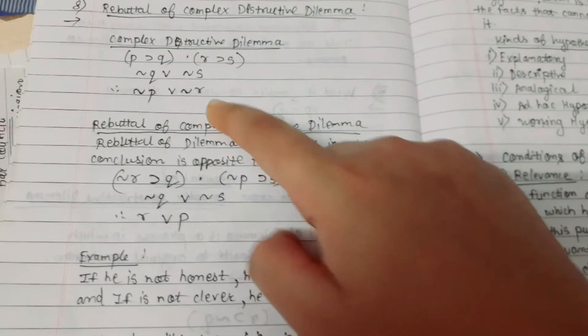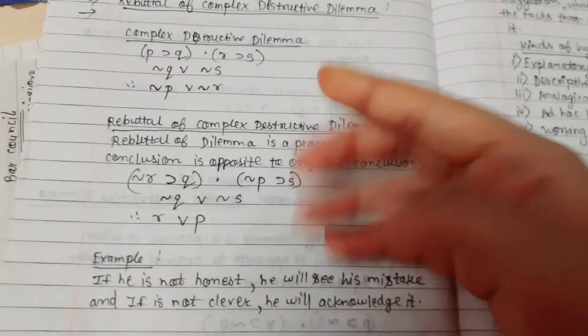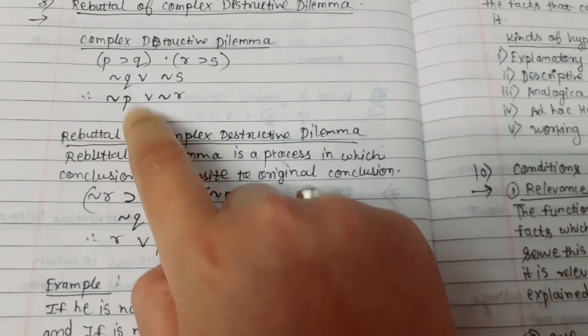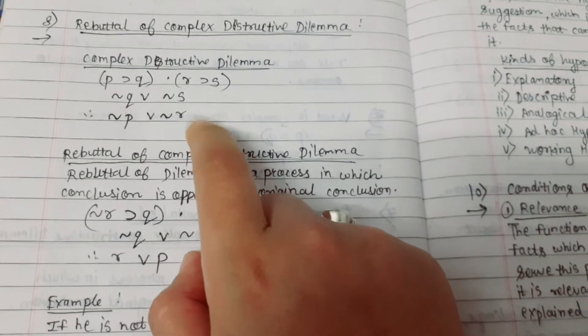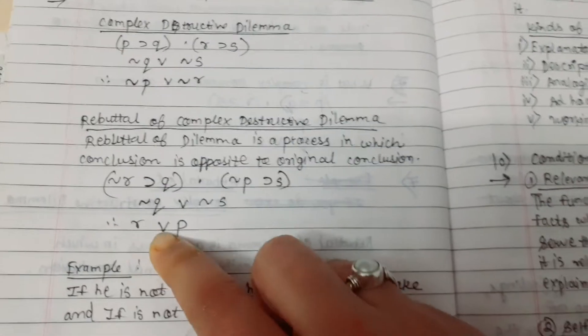So here also we can see conclusion is changed. Here negation P or negation R, it has become R or P.